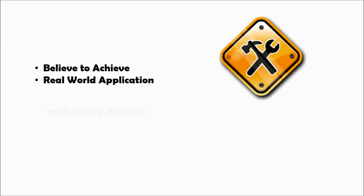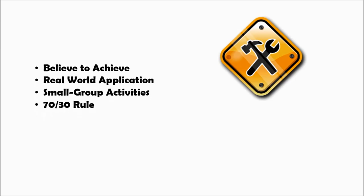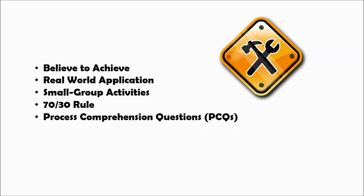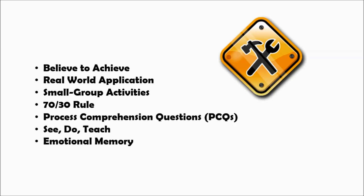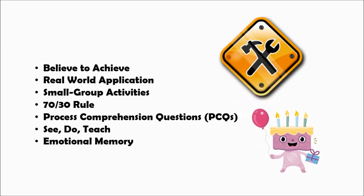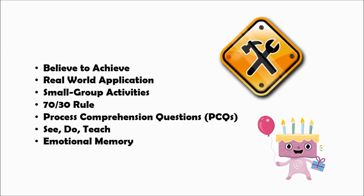Let's review what we learned in this adult learning theory tutorial: believe to achieve, real world application, small group activities, the 70-30 rule, process comprehension questions, see, do, teach, and emotional memory. By utilizing these tools, you're well on your way to becoming a world-class instructor and trainer.